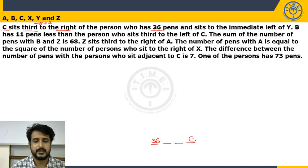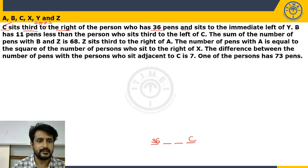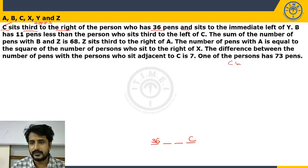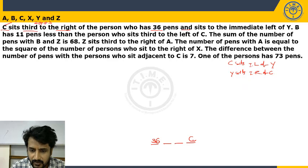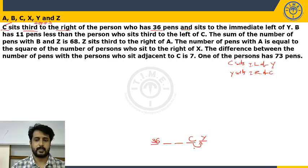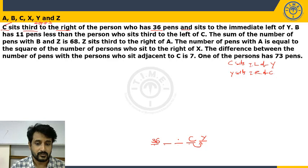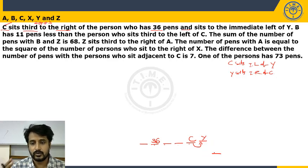Continuing clue 1: C sits immediate left of Y, which is the same as saying Y sits immediate right of C. Since all are facing north, we can place Y immediately to the right of C. So far, five positions are fixed. The one remaining person cannot be between 36 and Y — they must be either at the far left or the far right. This gives us two possibilities.